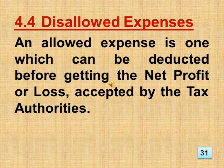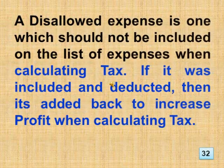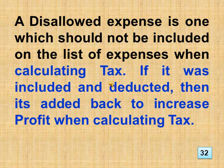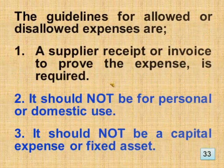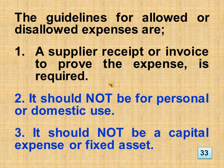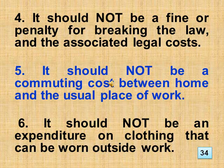Section 4.4 Disallowed Expenses. An allowed expense is one which can be deducted before getting the net profit or loss, accepted by the tax authorities. A disallowed expense is one which should not be included on the list of expenses when calculating tax. If it was included and deducted, then it's added back to increase profit when calculating tax. The guidelines for allowed or disallowed expenses are: 1. A supplier receipt or invoice to prove the expense is required. 2. It should not be for personal or domestic use. 3. It should not be a capital expense or fixed asset. 4. It should not be a fine or penalty for breaking the law and the associated legal costs.